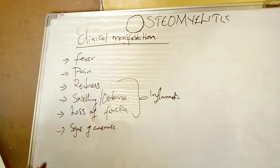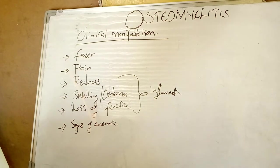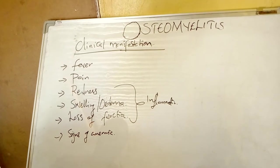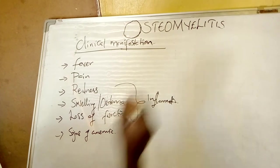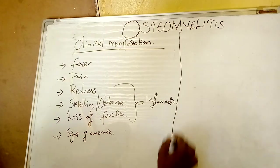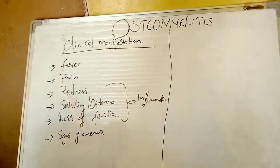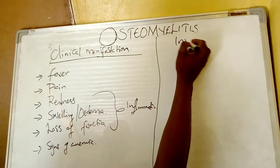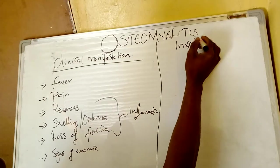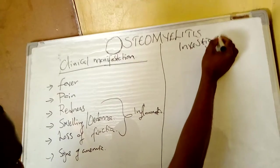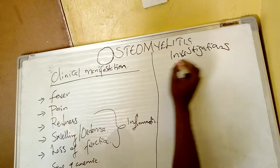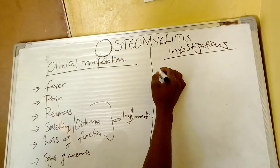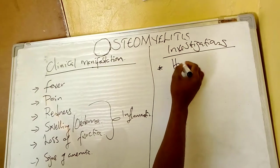Now let us look at the management. How can we come up with a diagnosis to say this is osteomyelitis? The first investigation we can carry out is history taking. We collect the history from the patient, or from the relative or guardian, to determine if the patient has had a bone infection.